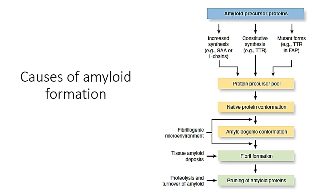The different causes of amyloid formation include: increased production of the protein, constitutive synthesis of the protein, or production of mutated proteins. All these proteins form a protein pool and normally assume normal conformation. But when there is a fibrillogenic microenvironment within the tissues, they turn into amyloid conformation — that is beta-pleated sheet conformation. These proteins then form fibrils and get deposited into the tissues, where they are resistant to proteolysis and macrophage digestion, and hence settle as amyloids.